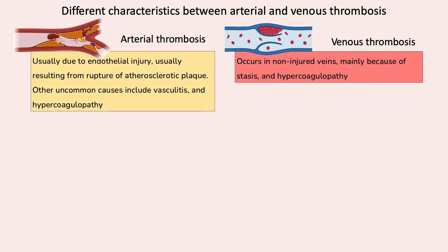The cause of arterial thrombosis is usually due to endothelial injury resulting from a rupture of the arteriosclerotic plaque. Other causes include vasculitis and hypercoagulability. Stasis is not a common cause of arterial thrombosis unless it develops in large spaces such as in the cardiac ventricle or aorta following an aneurysm.